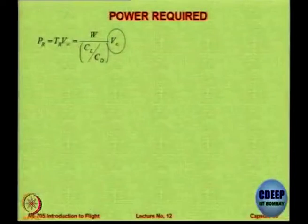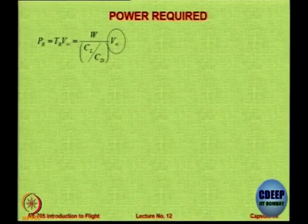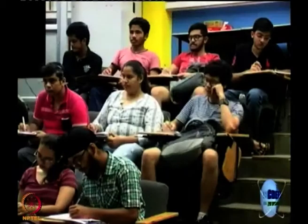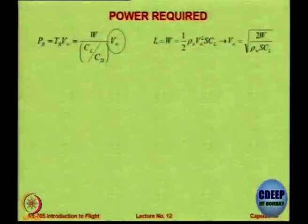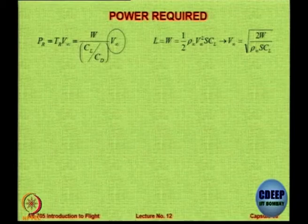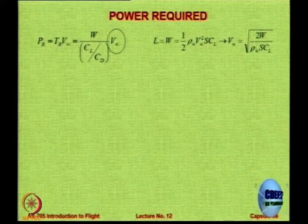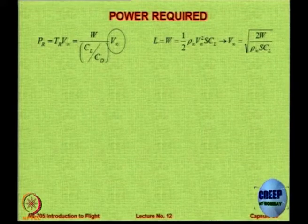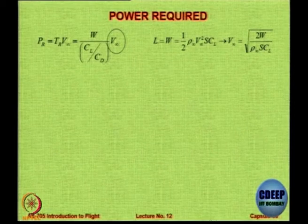So here we have used the simple expression derived last time. For steady level flight, V∞ is equal to root over 2W by ρSCL. You have used the condition that in level flight lift is equal to weight, so L = W = half ρV²SCL. Therefore V∞ will be root of 2W by ρSCL. So now replace V∞ inside the circle by root of 2W by ρSCL.